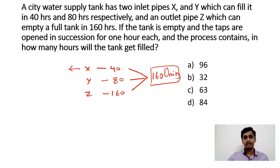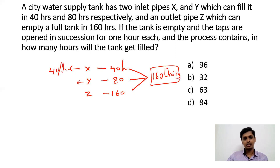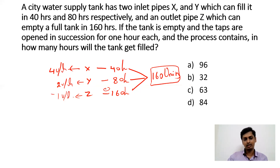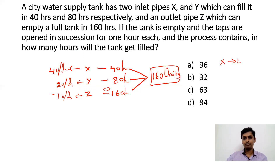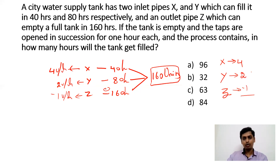Pipe X fills 160/40 = 4 units per hour. Pipe Y fills 160/80 = 2 units per hour. Pipe Z empties 160/160 = 1 unit per hour. Working in succession: first hour X fills 4 units, second hour Y fills 2 units, third hour Z empties 1 unit. So in 3 hours, totally 4 + 2 − 1 = 5 units are filled.